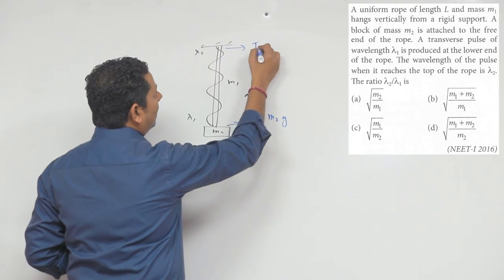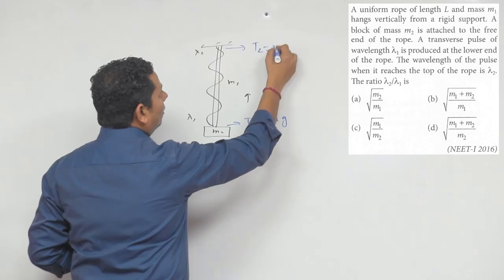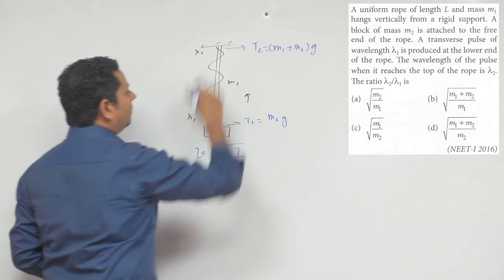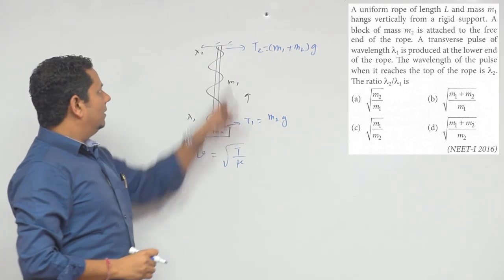Here at the top, the tension T2 is M1 plus M2 times g, because the tension increases.